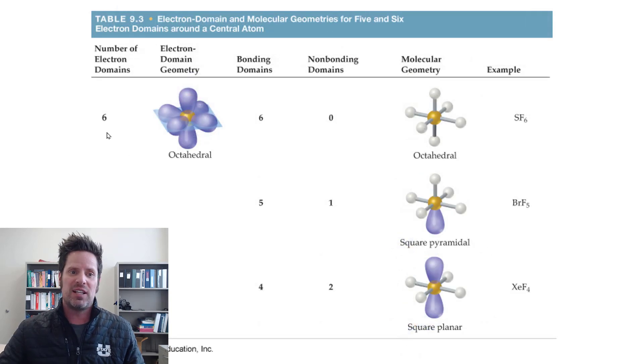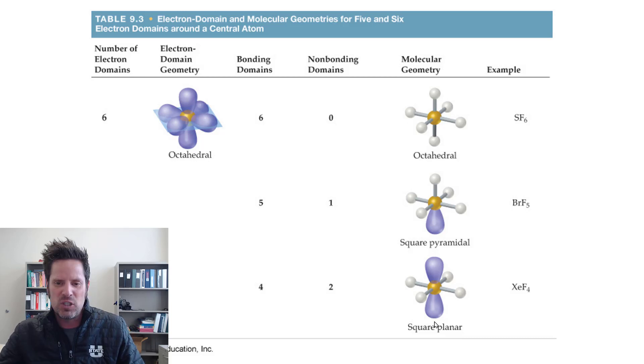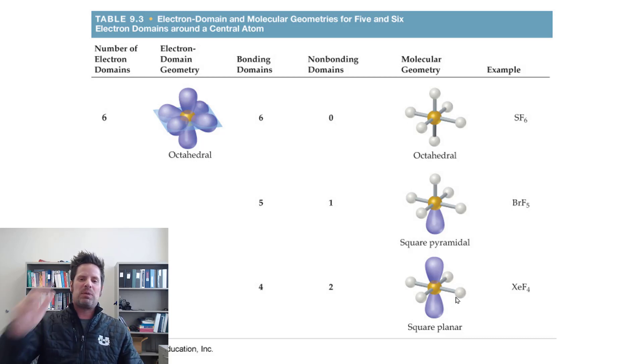Then, if you go on to six electron domain geometries, that is the octahedral world, you get the variety shown right here. I don't know why, but I really find square planar fascinating. I just, I like the name. I think it looks kind of like a toy boomerang. I don't know. I think it's pretty neat.